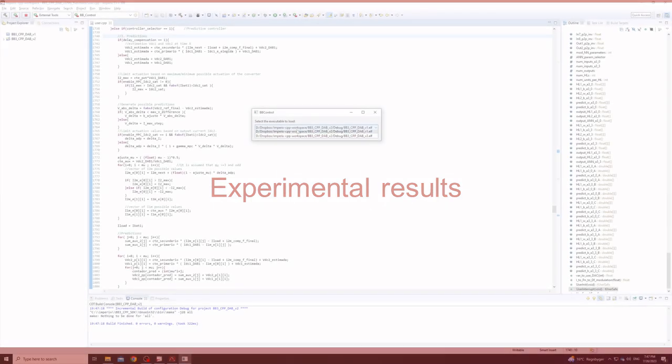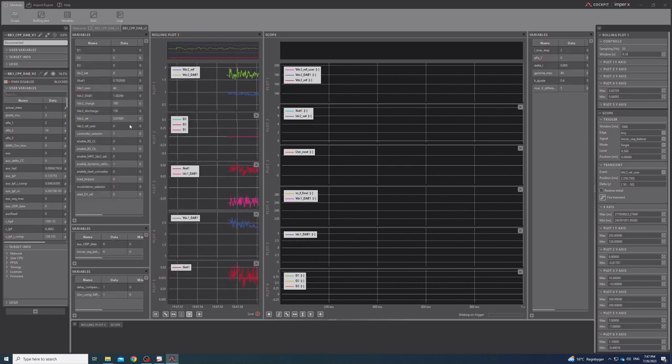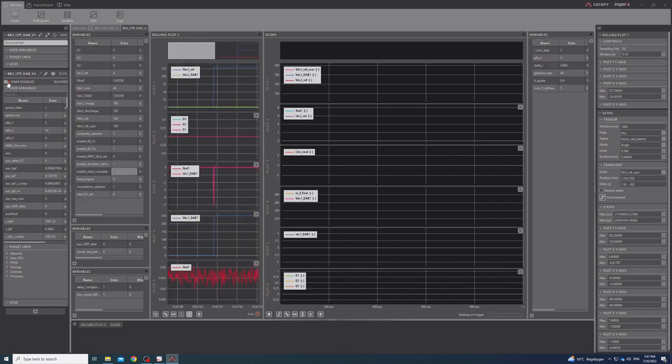First, the code is built and loaded into the control platform. Next, the input voltage source is provided and a black start is implemented to increase the output voltage.